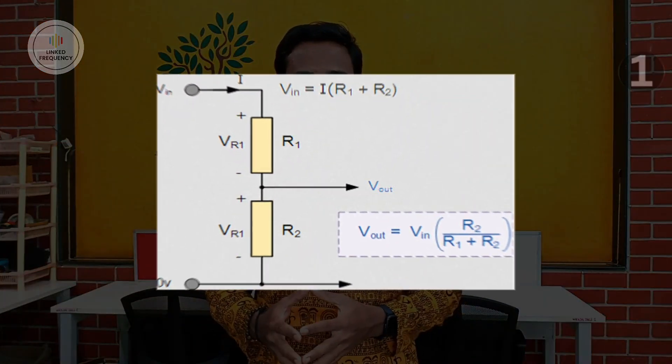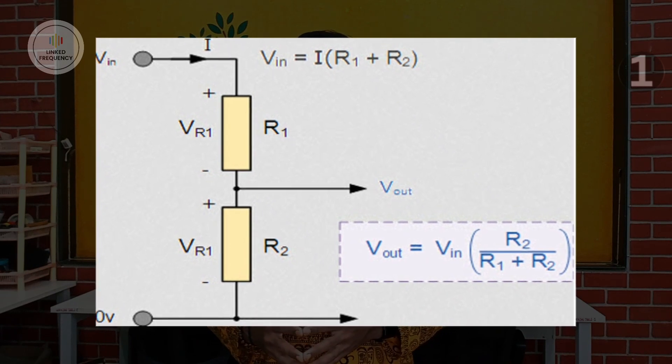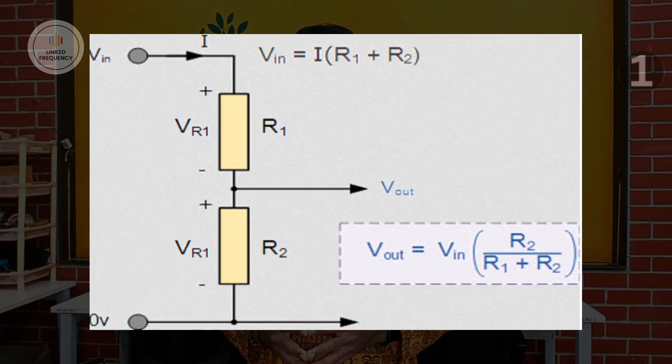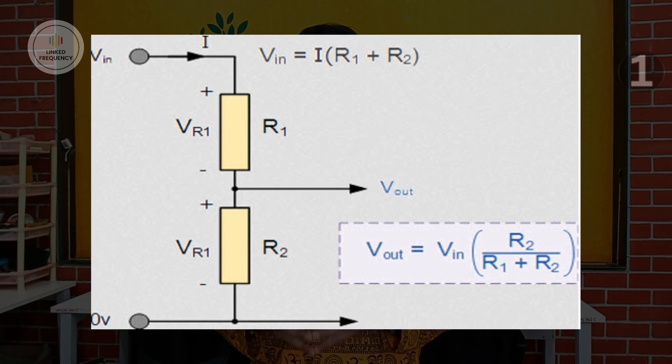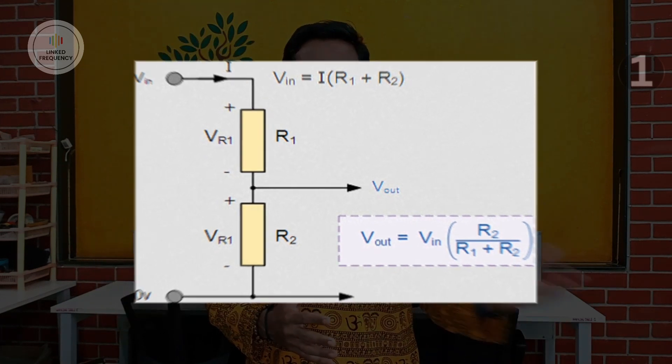Say for example you have a sensor which generates 0 to 12 volts based on the sensing value, and you have a microcontroller or development board which works at 3.3 volts. If you connect the output of this sensor directly to this microcontroller, it will harm that microcontroller. Instead, we will use a voltage divider circuit in between to step down the sensor voltage from 0–12 volts to 0–3.3 volts. You can see on the screen how the voltage divider circuit looks, along with the formula used for calculating R1 and R2. R1 and R2 values are directly proportional to the voltage level you want to degrade from high to low.